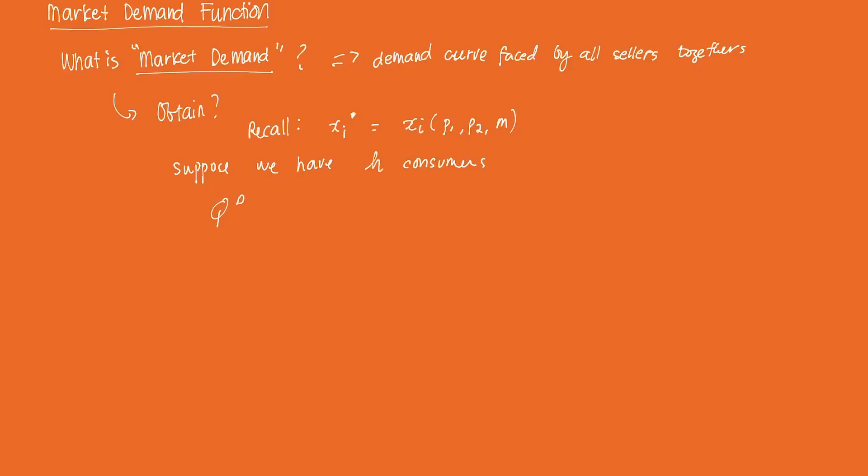...is just going to be equal to sum, i equals 1, until all the consumers have been summed up of their individual Marshallian demand functions, that's XIH, which is some function of P, or prices. And you're going to get your market demand function, which is some function of P.